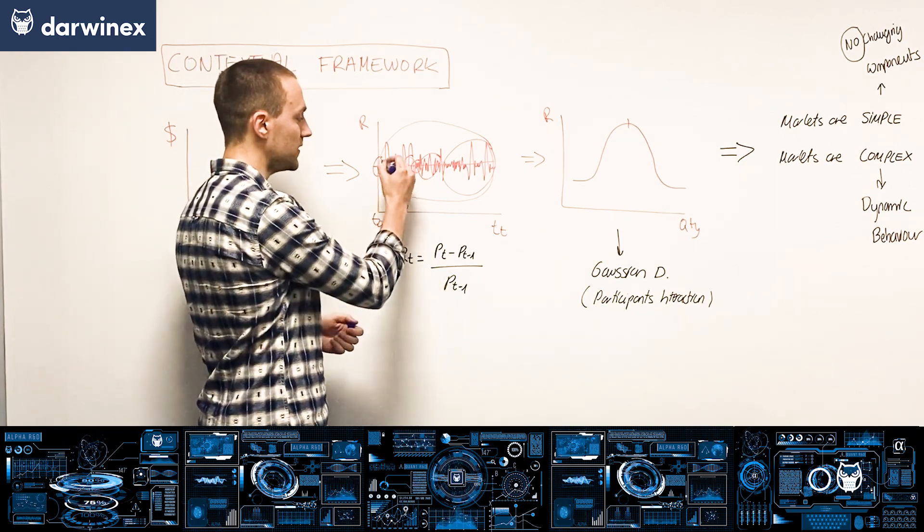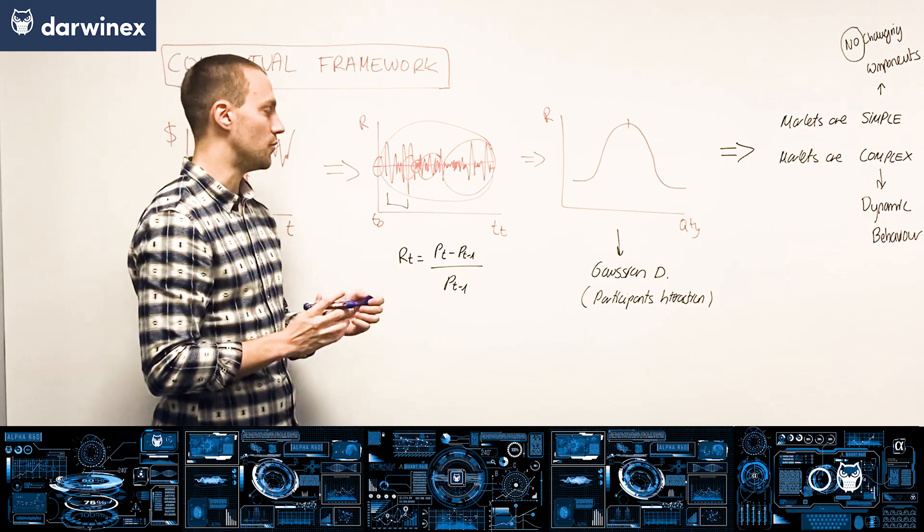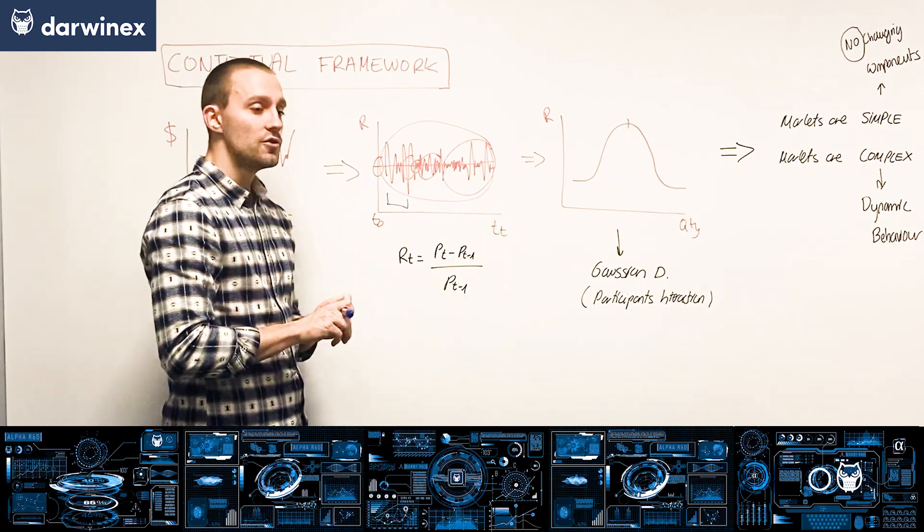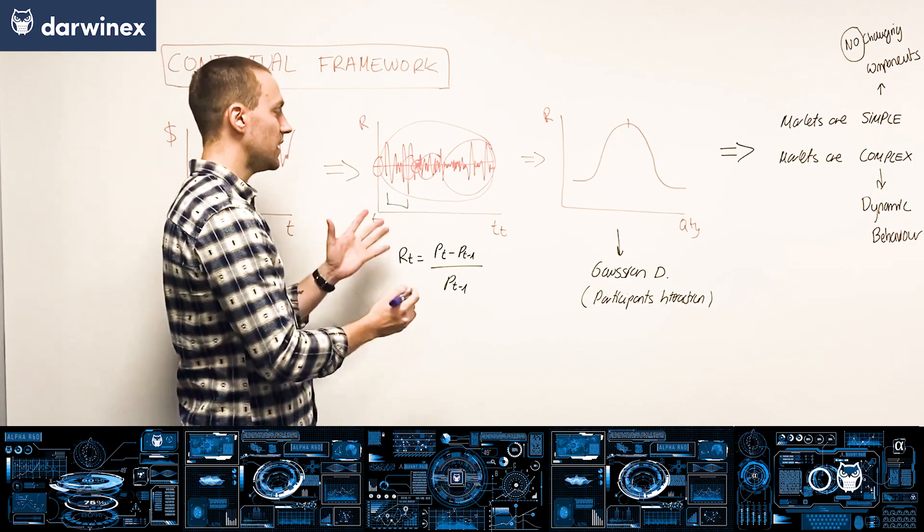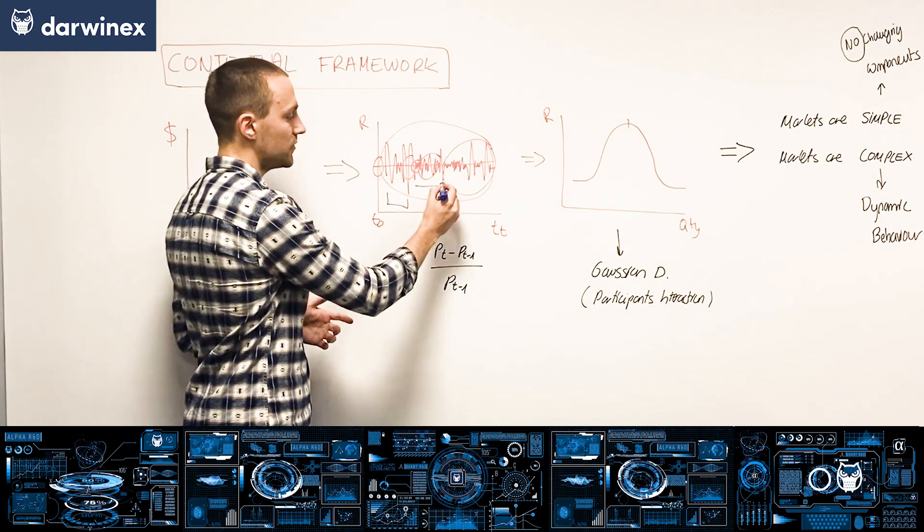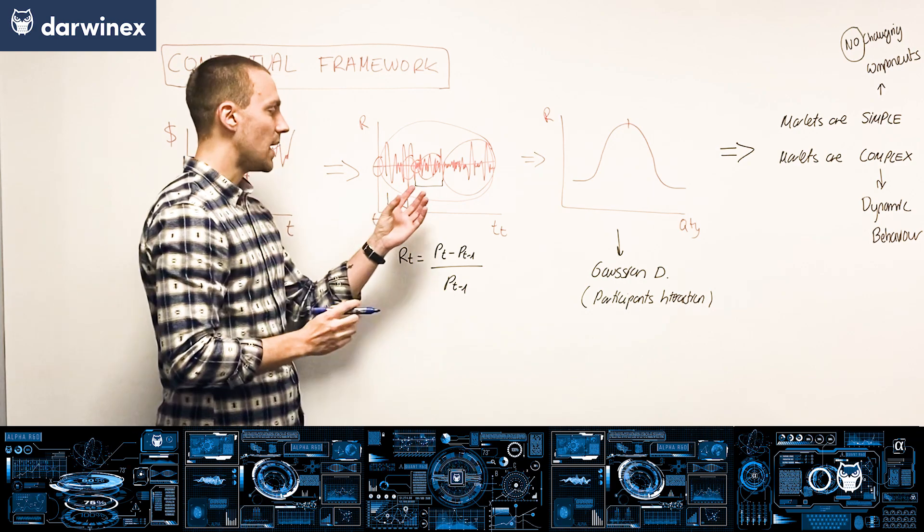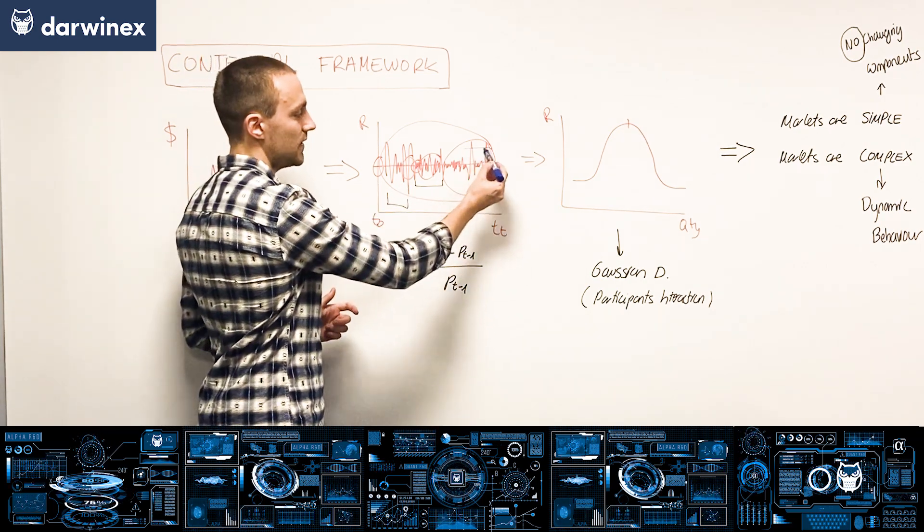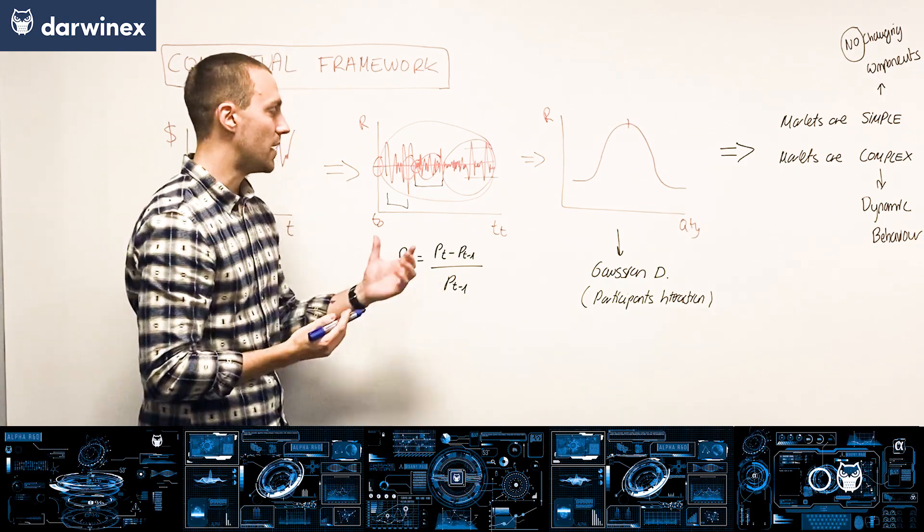If we just take this lookback period to get that distribution of returns, I'm sure that you will find that on some periods of time we might have lower variance compared to others that are much more variant.